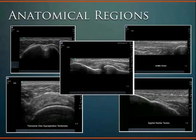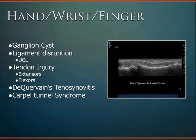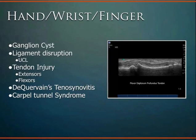Now with a sense of what tendons, bones, and muscle look like, we'll jump into specific anatomical regions for clinical application. For the hand, wrist, and finger — very superficial structures with great anatomy visible — common uses include ganglion cysts, ligamentous disruption (particularly the ulnar collateral ligament of the thumb MCP joint, easily visualized), tendon injuries of extensor and flexor tendons, de Quervain's tenosynovitis, and carpal tunnel — for both imaging and ultrasound-guided injections.